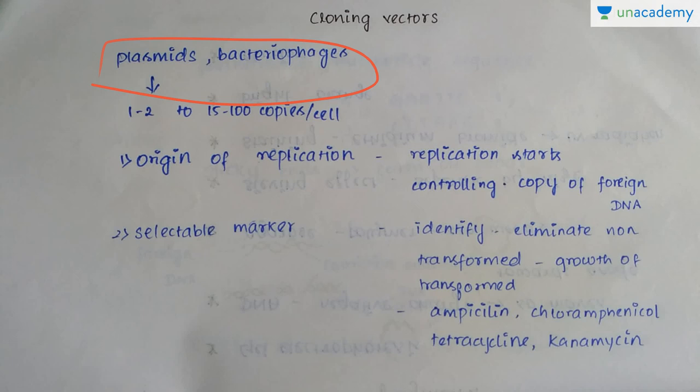The first property is the origin of replication. It is a sequence where replication starts. If we want our alien DNA to get replicated, we have to attach it to this origin of replication so that it can replicate. It also controls the number of copies of the foreign DNA.